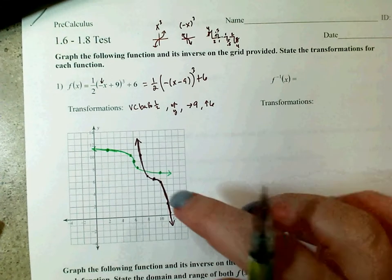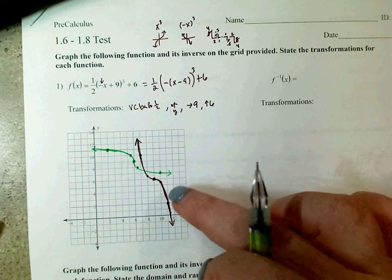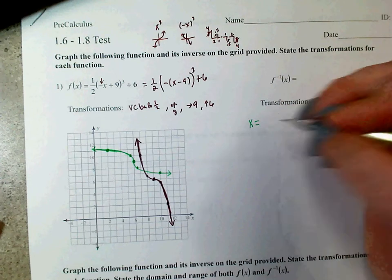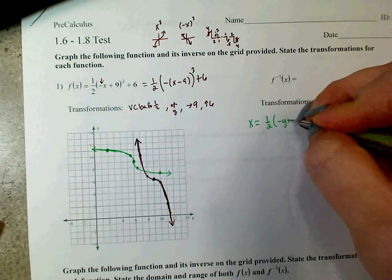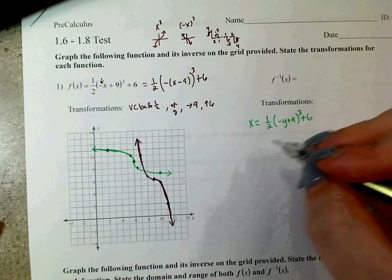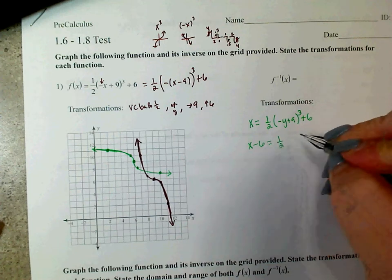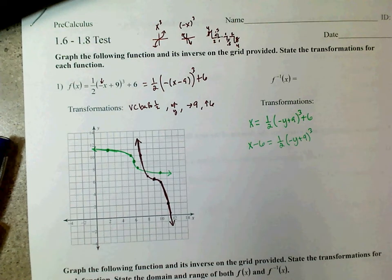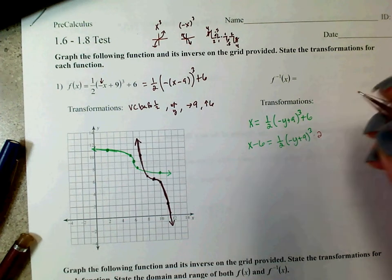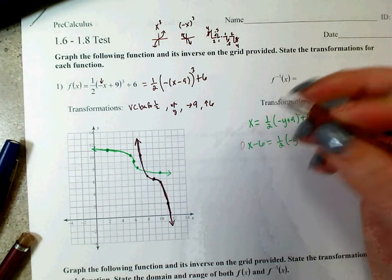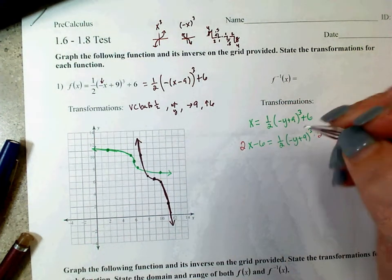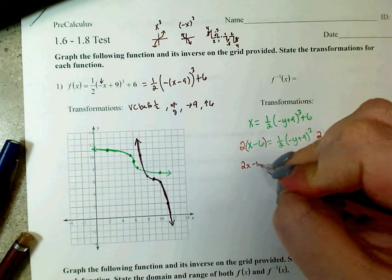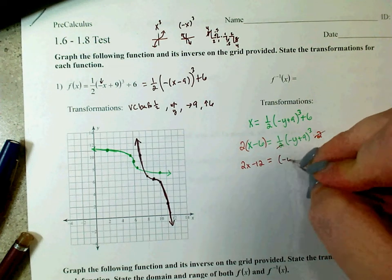Now I'm going to go ahead and find the inverse and make sure those points make sense. Starting with x equals one half times (negative y plus 9) cubed plus 6, I need to solve for y. Subtract 6: x minus 6 equals one half times (negative y plus 9) cubed. Multiply by 2: 2x minus 12 equals (negative y plus 9) cubed. If you just wrote 2x minus 6, be careful — you're multiplying the 2 times everything, so it becomes 2x minus 12.